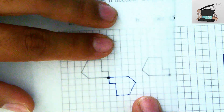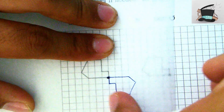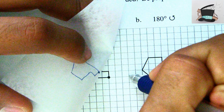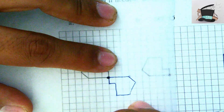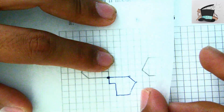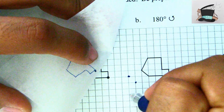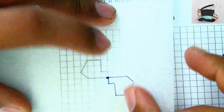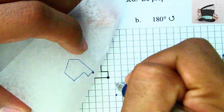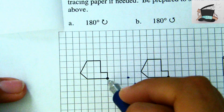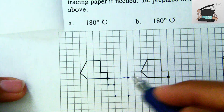Now I just need to lift this up and mark where the points should be. One of these points ends up right here, and the other one is over here. You just keep lifting it up and figuring out where your points are for the new shape so you'll be able to connect them and recreate your shape. Just need one more there.